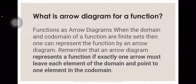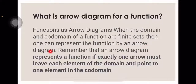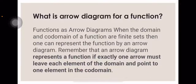What is an arrow diagram for a function? Functions can be shown as arrow diagrams when the domain and co-domain of a function are finite sets — one can represent the function by an arrow diagram. An arrow diagram represents a function if exactly one arrow leaves each element of the domain, pointing to one element in the co-domain.